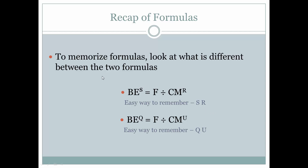Now let's recap and look at these formulas and a few memory tools to help memorize them. Notice what's different between the two formulas — they look the same except one solves for sales and the other for quantities. Fixed expenses are the same in both; one divides by the contribution margin ratio and the other divides by the contribution margin per unit. As an easy way to remember: when solving for Sales, use the Ratio — SR. When solving for Quantities or units, use the contribution margin per Unit — QU. So SR and QU will help you remember these formulas.